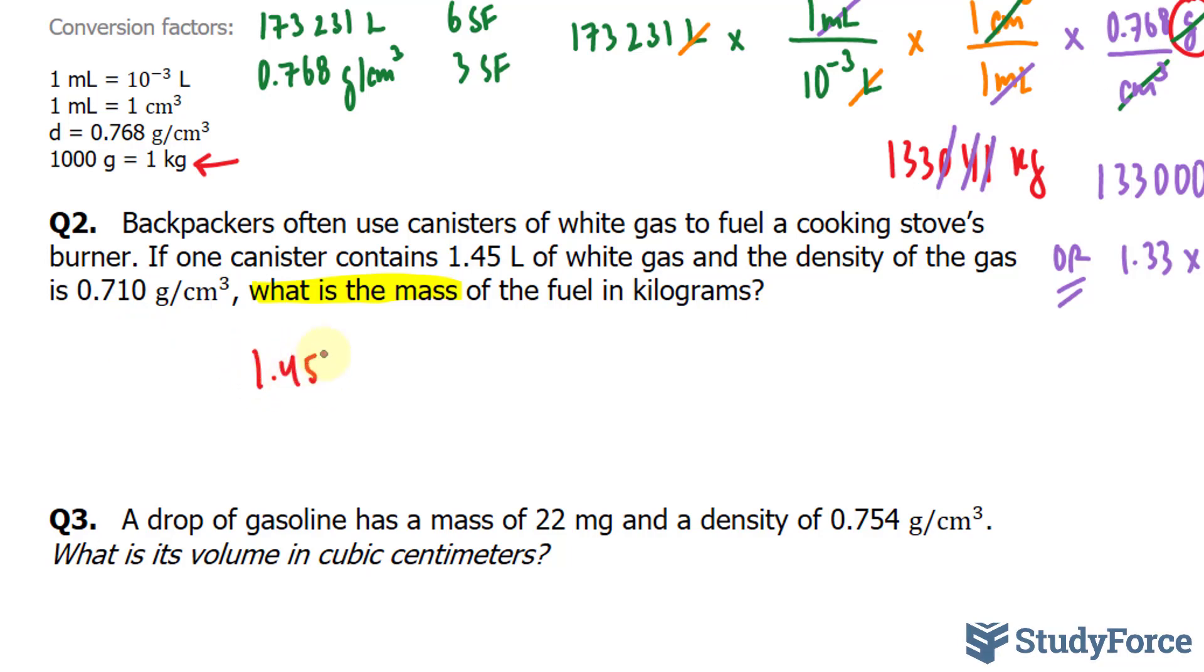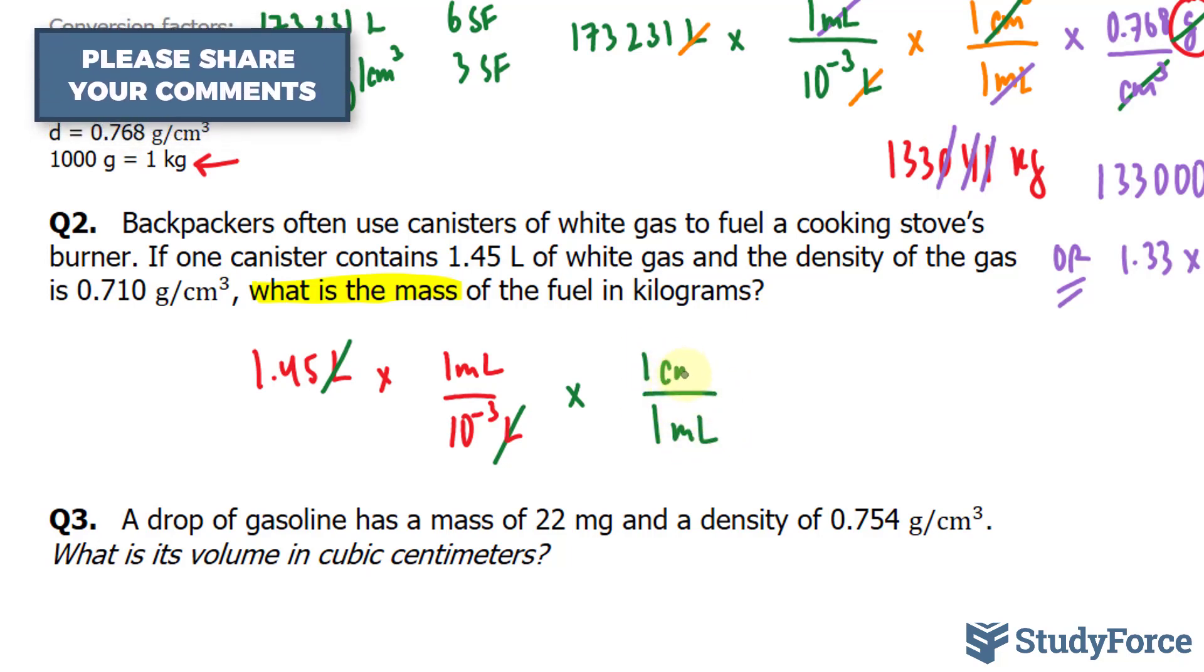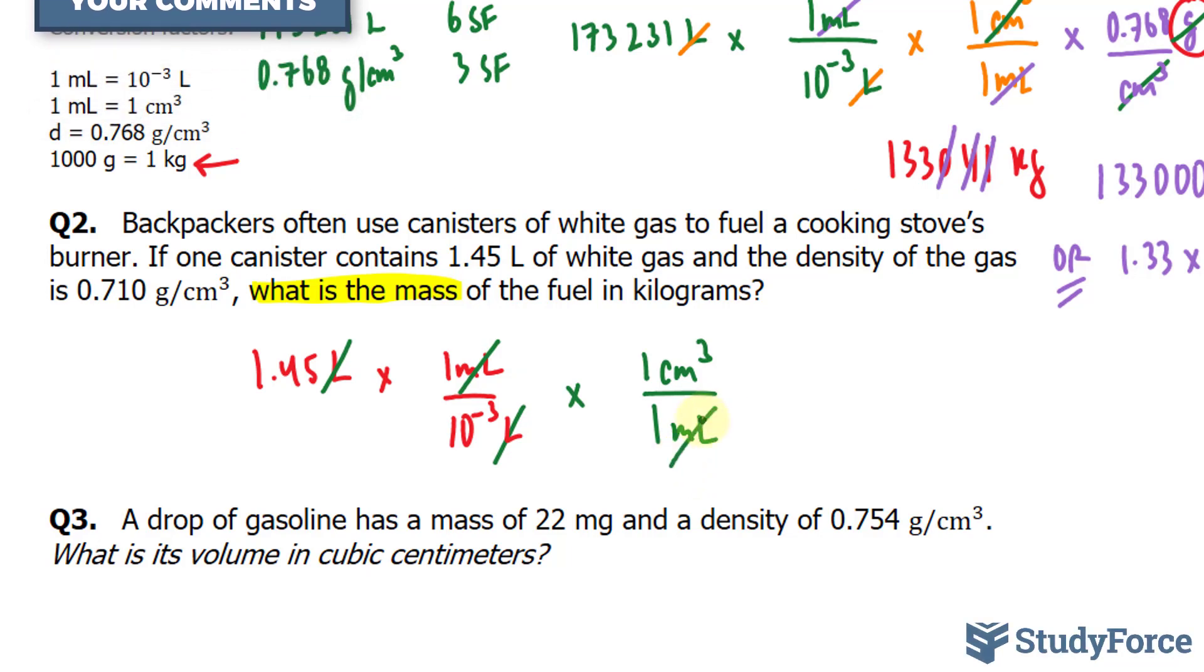I'll take 1.45 liters, multiply it by this conversion factor: 1 milliliter over 10 to the power of negative 3 liters. That will cancel out the liters. Then, I'll multiply this product by this conversion factor, where I'll put milliliters at the bottom, and at the top, 1 centimeter cubed. That will cancel out the milliliters.